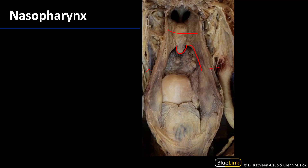Here's the soft palate, so anything above this will be the nasopharynx, the roof of which will have the pharyngeal tonsil, and the lateral wall will have the opening to the auditory or eustachian tube.